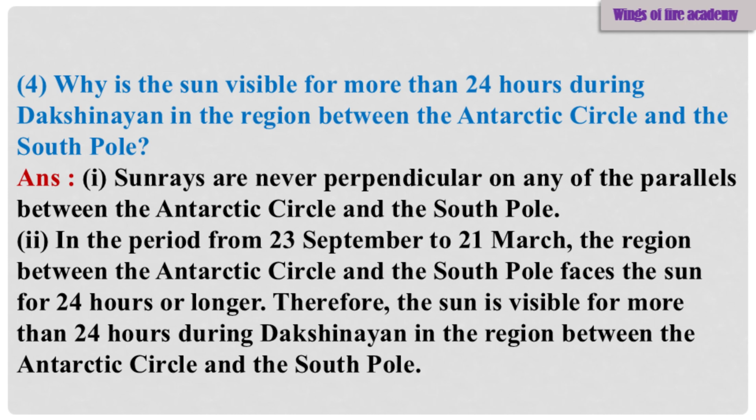Sub-Question 4: Why is the sun visible for more than 24 hours during Dakshinayan in the region between the Antarctic Circle and the South Pole? Answer: 1. Sun rays are never perpendicular on any of the parallels between the Antarctic Circle and the South Pole. 2. In the period from 23rd September to 21st March, the region between the Antarctic Circle and the South Pole faces the sun for 24 hours or longer. Therefore, the sun is visible for more than 24 hours during Dakshinayan in that region.